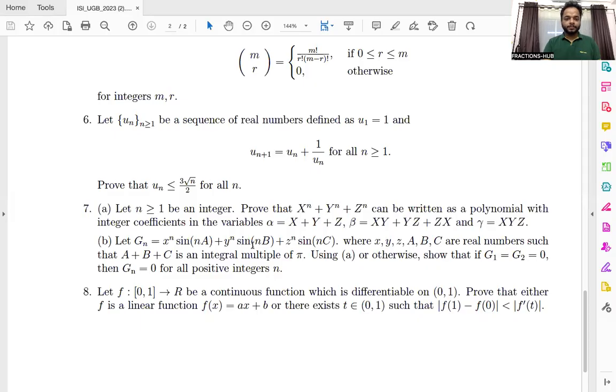Here we are at the sixth problem, which was another relatively easier problem. It says you have a sequence of real numbers defined as u_1 = 1, and recursively the next terms are defined as u_{n+1} = u_n + 1/u_n for all n ≥ 1. We have to prove that u_n ≤ (3/2)√n for all n.